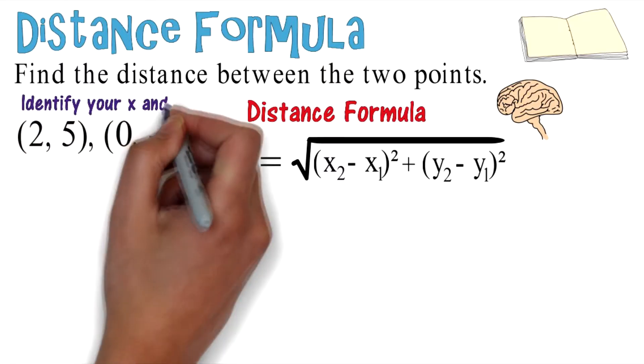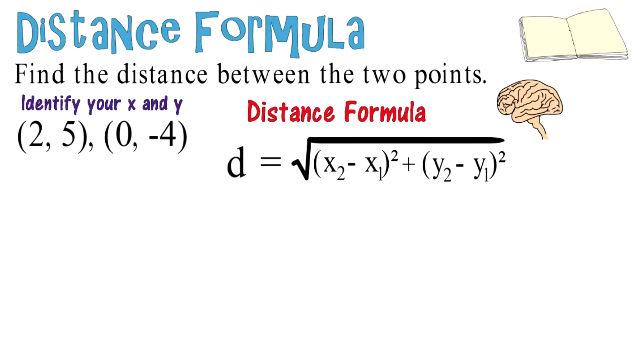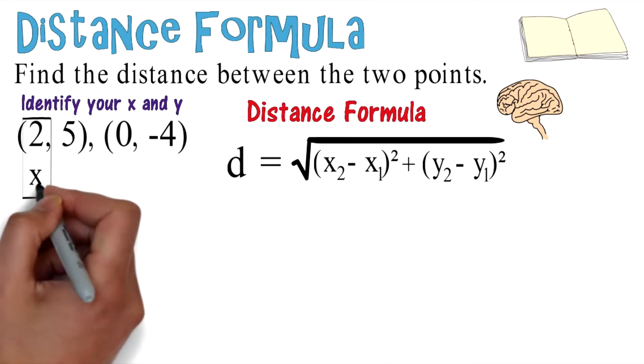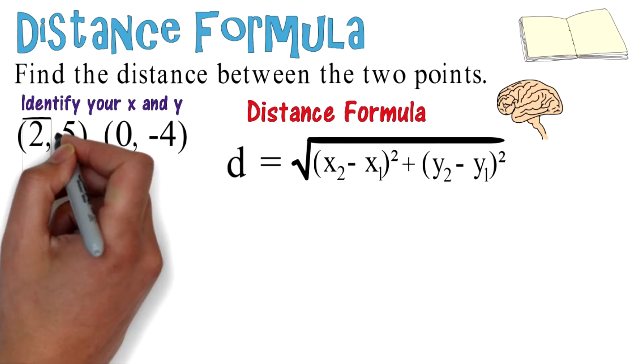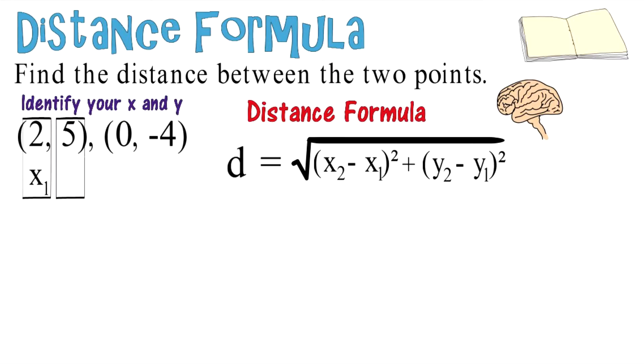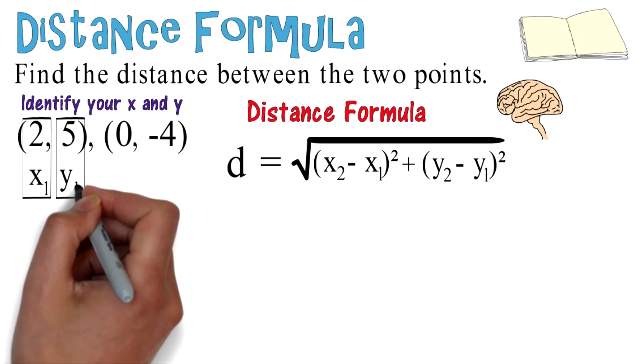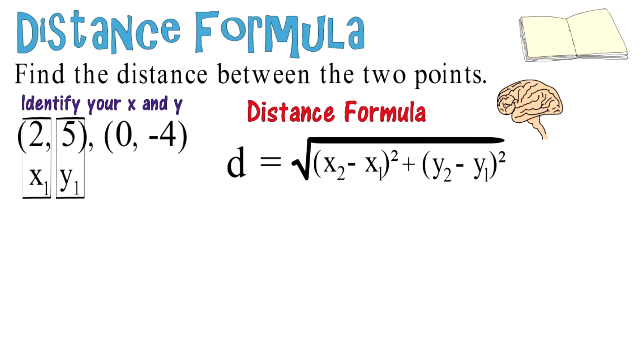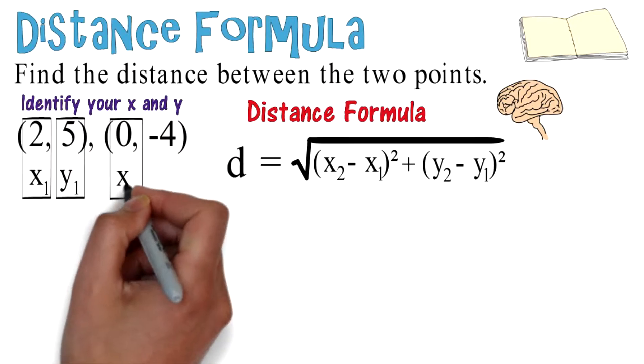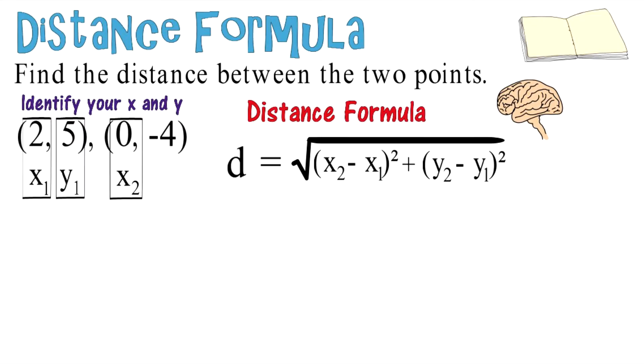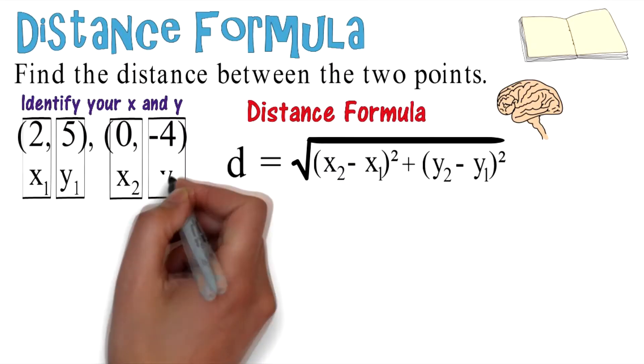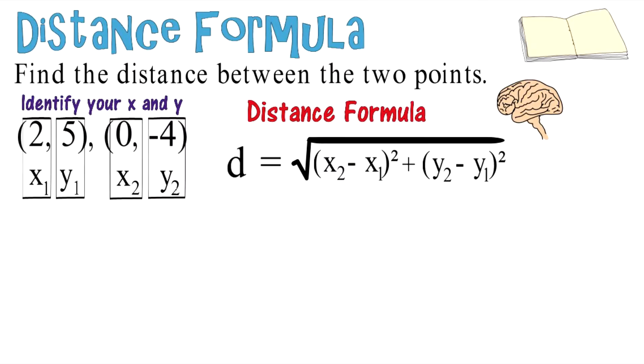First, identify your x and y. We'll begin with the 2: 2 is your x₁. Remember, x comes before y in the alphabet, just the same it comes before y in the coordinate plane. Here is your y₁. So 2 is x₁, 5 is y₁, 0 is your x₂, and -4 is your y₂.